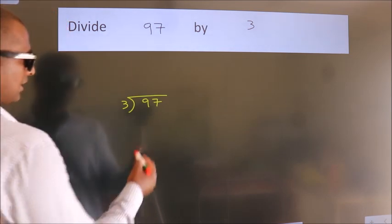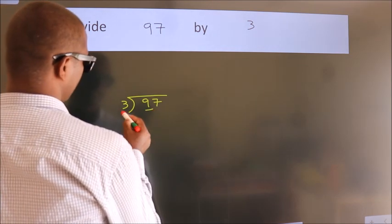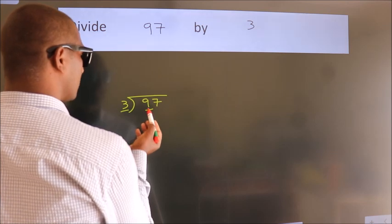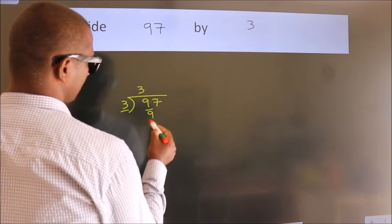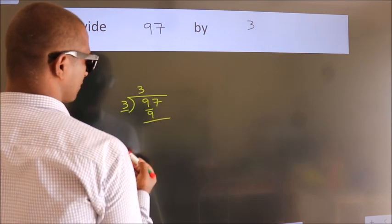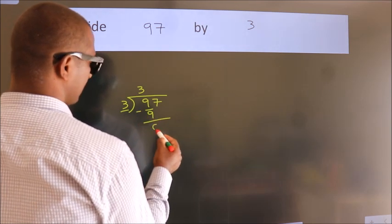Next. Here we have 9, here 3. When do we get 9 in 3 table? 3 times 3 is 9. Now we should subtract. We get 0.